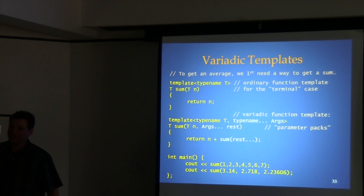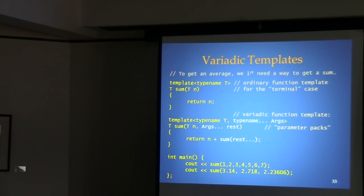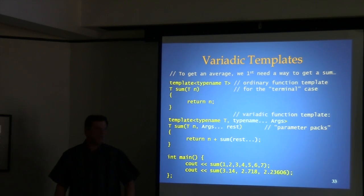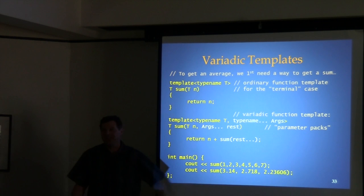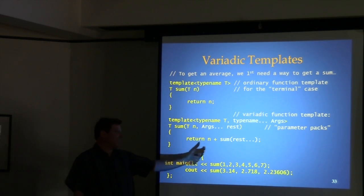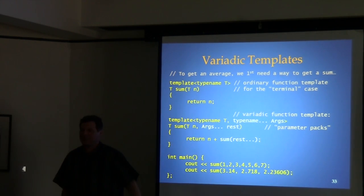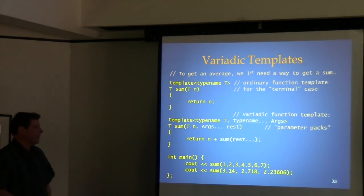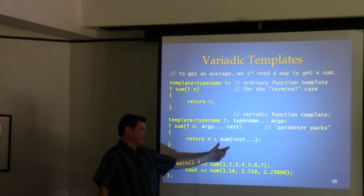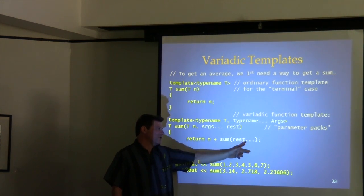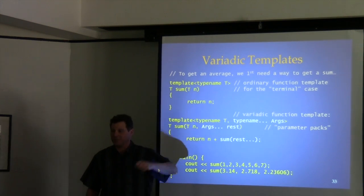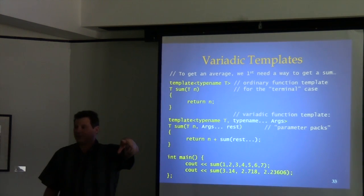A question: is the `...` token separate from the identifier? Yes, `...` is its own token. The next example shows handling different types in the pack. Whether whitespace between the dots and the identifier matters — I suspect it still works because it's a token stream: an identifier followed by the `...` token.